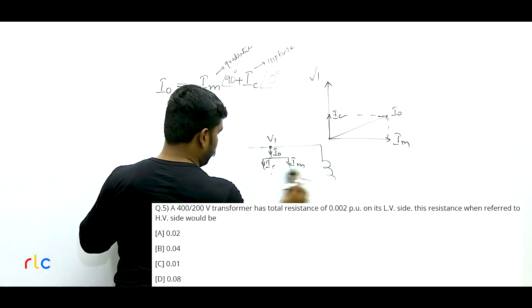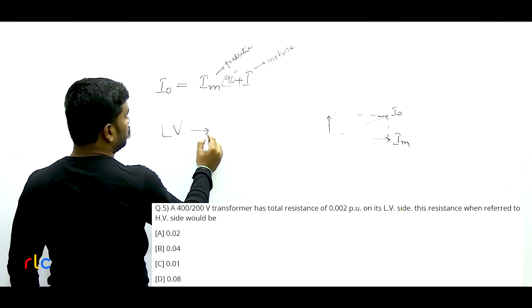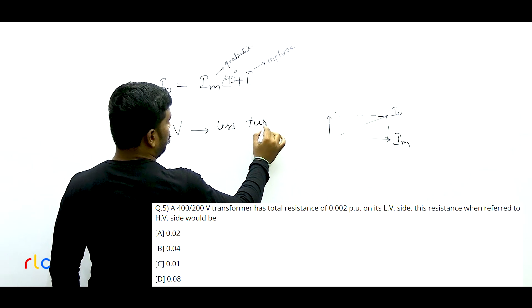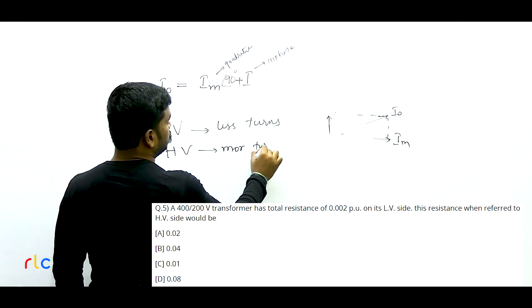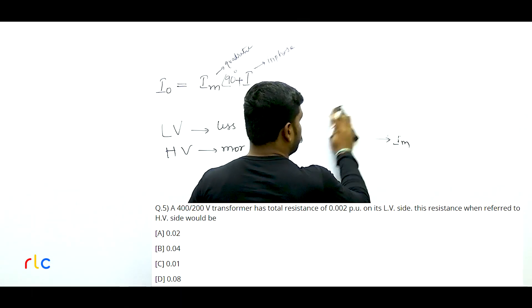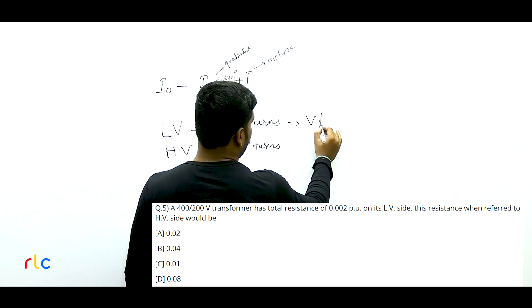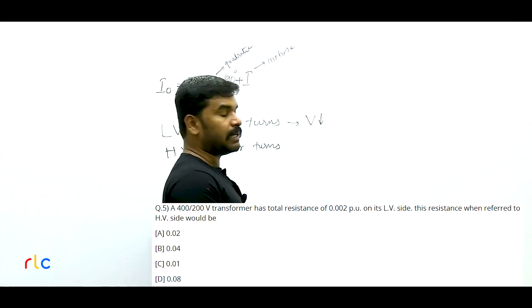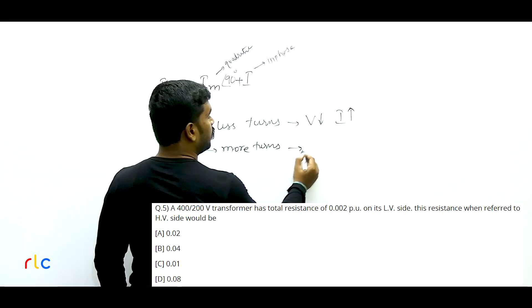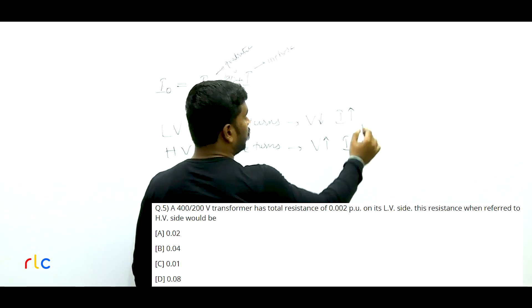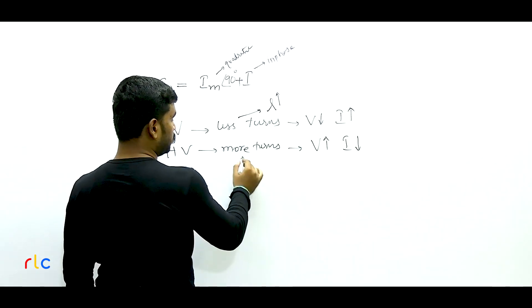Next question involves a transformer with primary side AB and secondary side CD connected to a pure inductive load. The secondary current I lags E2 by exactly 90 degrees. We need to find the phasor relationship between VAB (primary supply voltage) and current I. This requires knowledge of the transformer vector diagram.